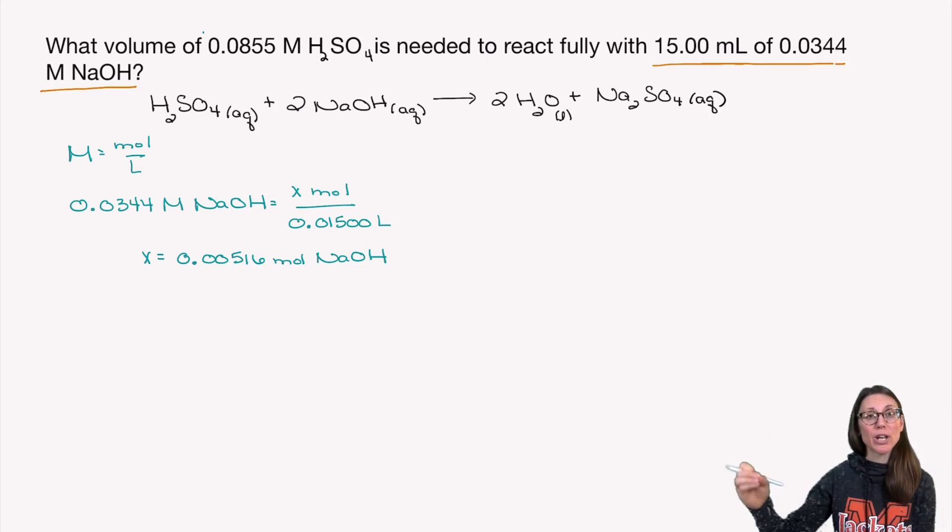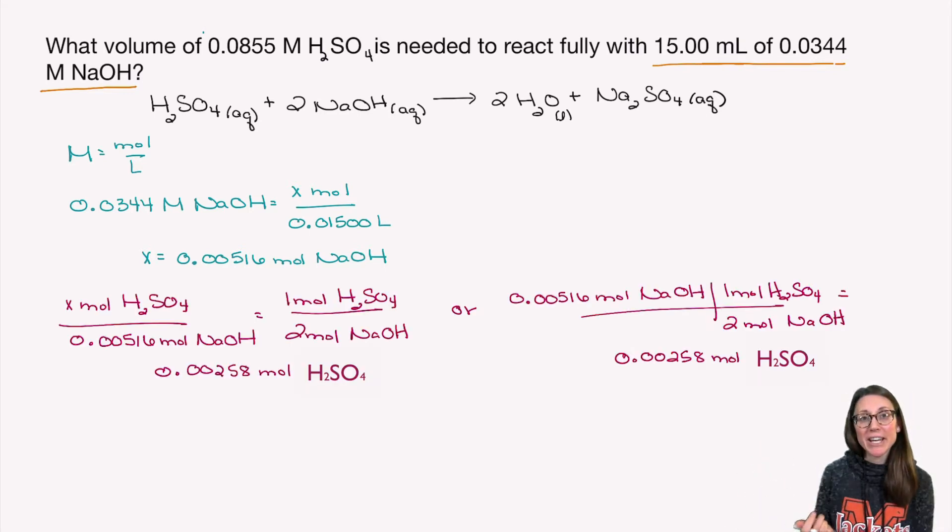From here, I can now convert to moles of H2SO4 of our target compound. I carried out this conversion using both proportions on the left and dimensional analysis on the right with that mole ratio. Pick your favorite. Get there. So now we have moles of sodium hydroxide. Our last step is to determine the volume of the sulfuric acid that's needed. Because we're still talking about a solution, we're back to our molarity equation.